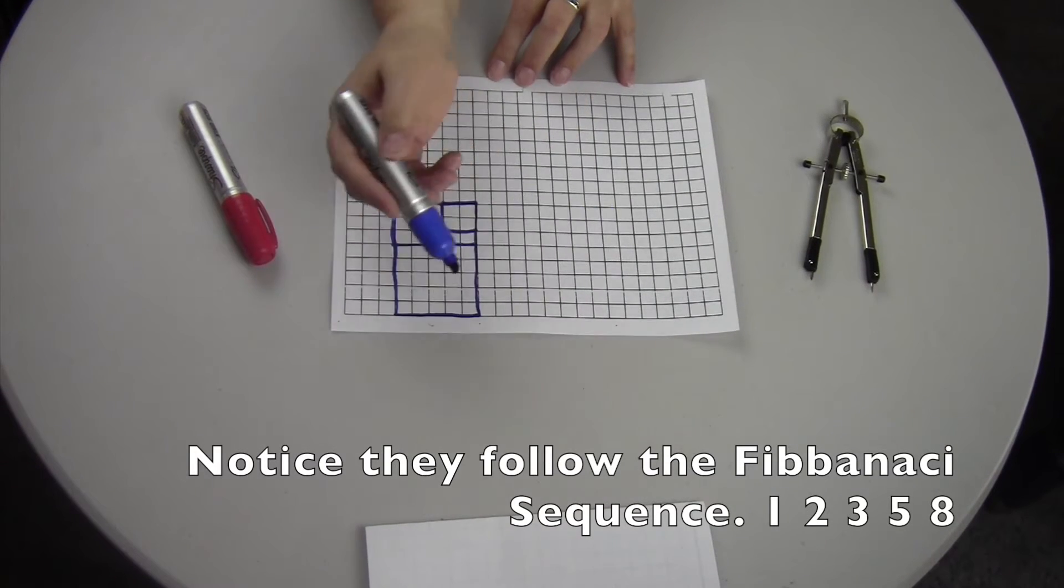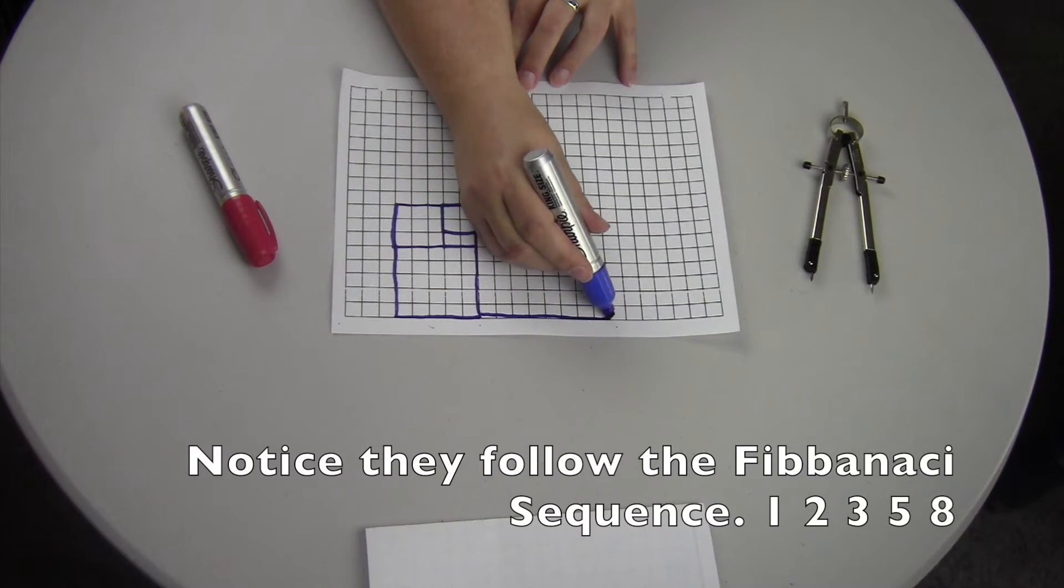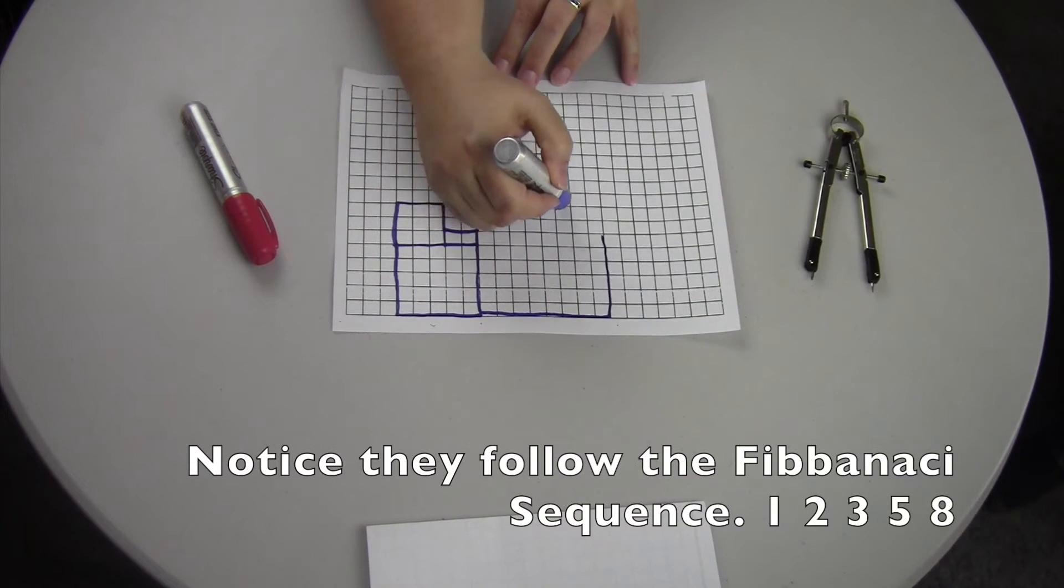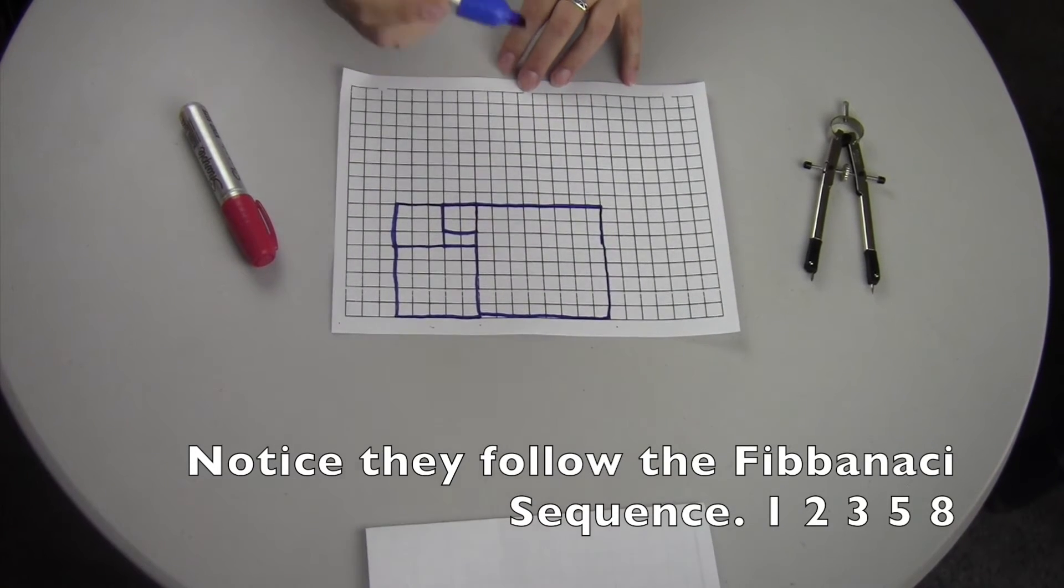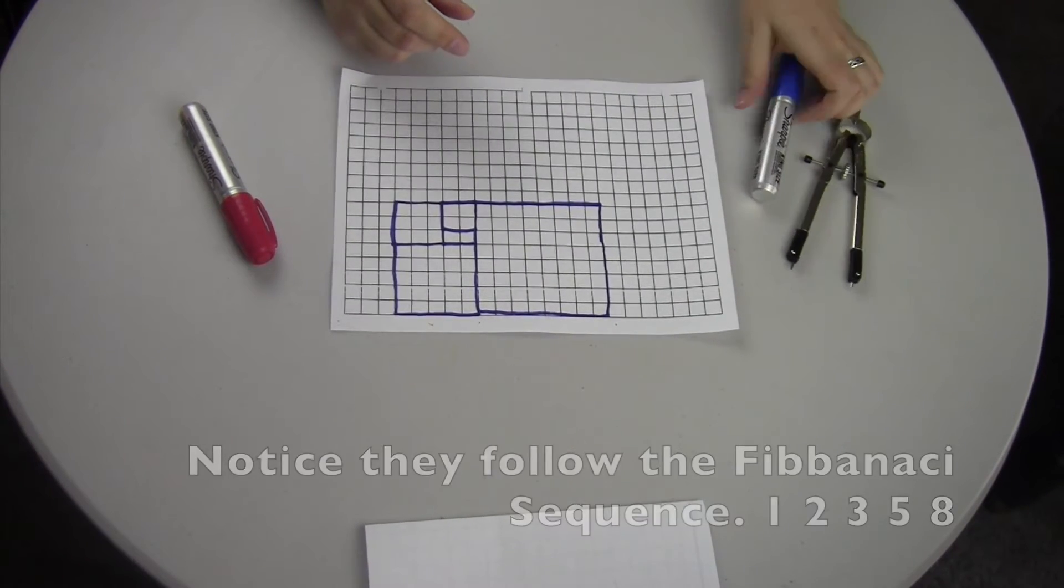And now we're going to square down here, and we're going to go to an 8. And then you can keep going with a 13x13 and et cetera. But let's just do it from here to here.